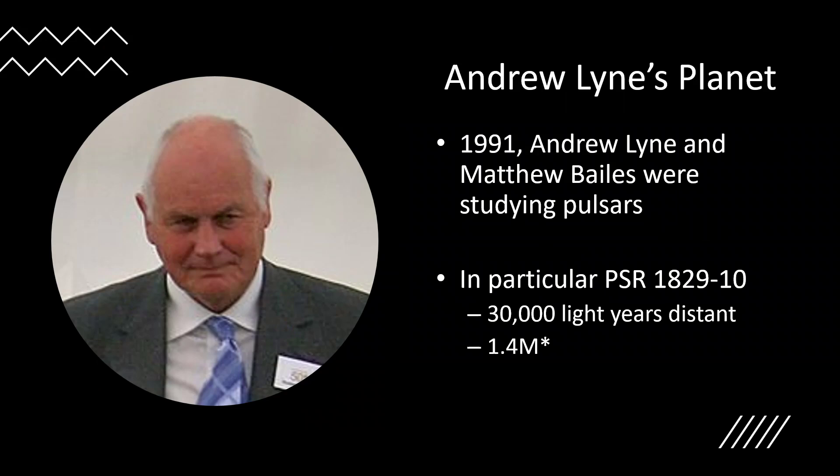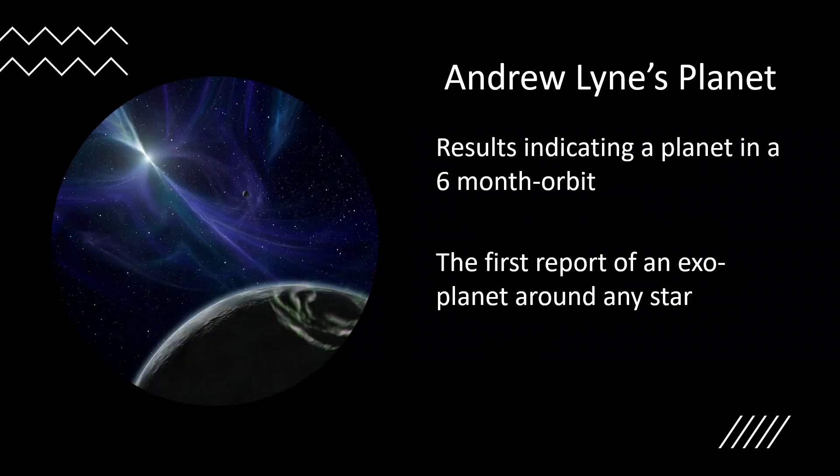Rather famously, back in 1991, Andrew Lyne and Matthew Bailes were studying pulsars, in particular PSR 1829-10, a 1.4 solar mass pulsar 30,000 light years away. These radio signals are detectable at very long distances, and he produced results indicating that there was a planet in a six-month long orbit. This would have been the first report of an exoplanet around any star, pulsar or ordinary star. This was years before the discovery of 51 Pegasi b and the exoplanet rush that then followed.